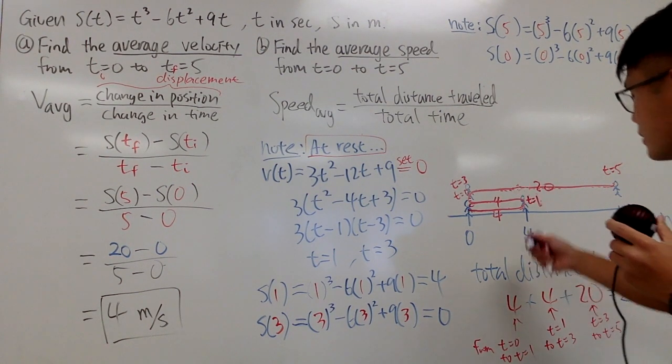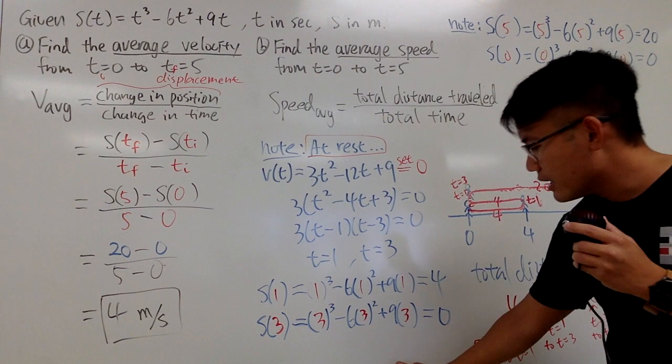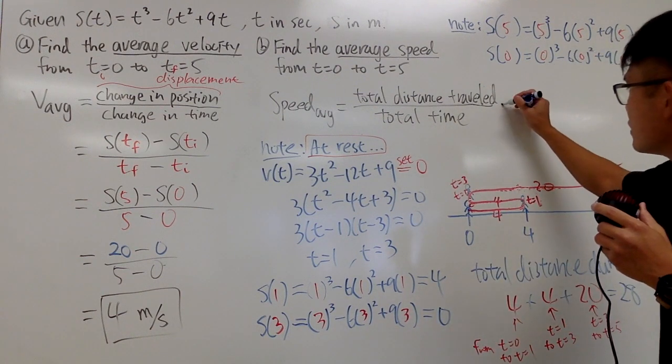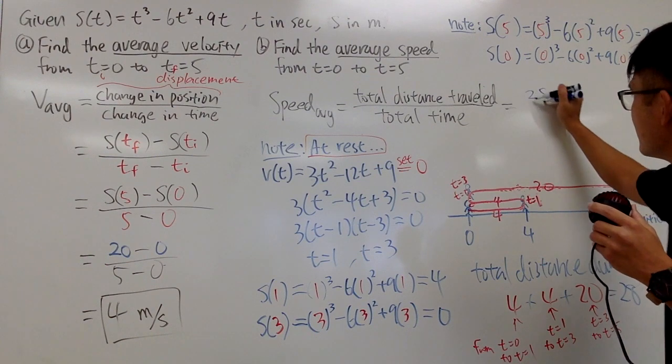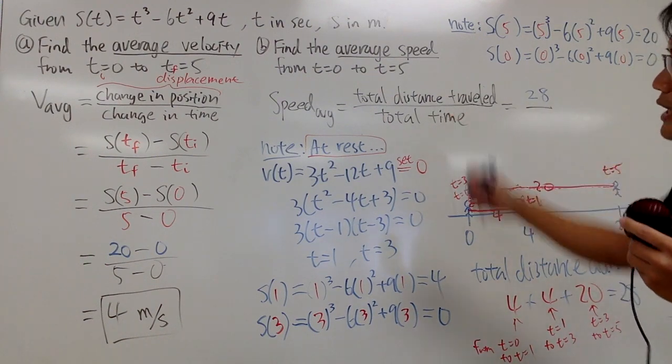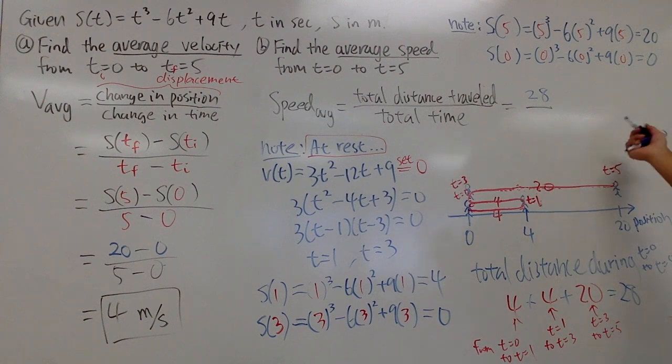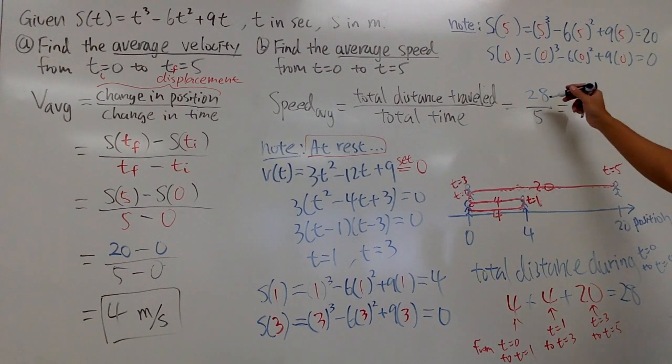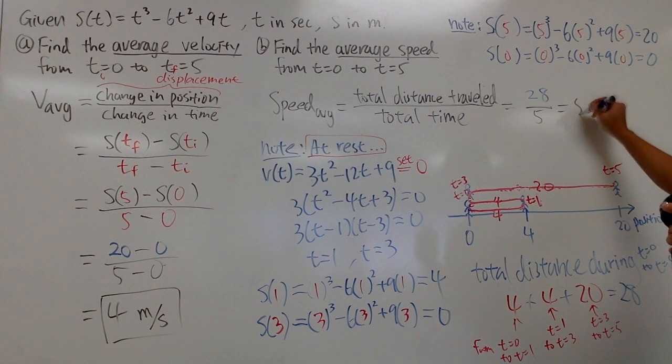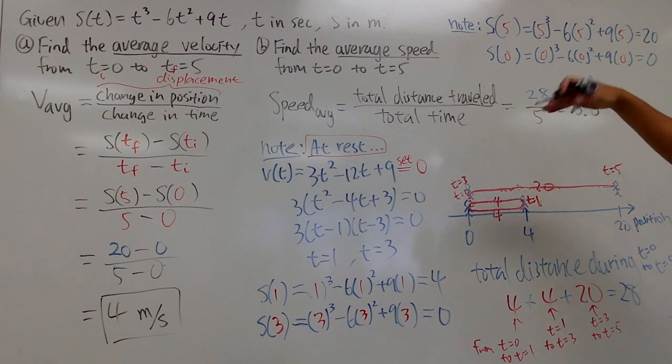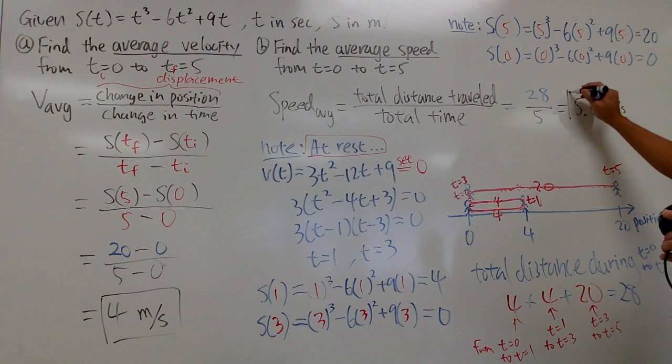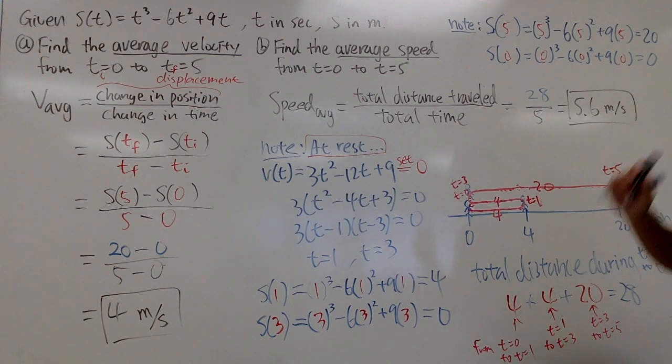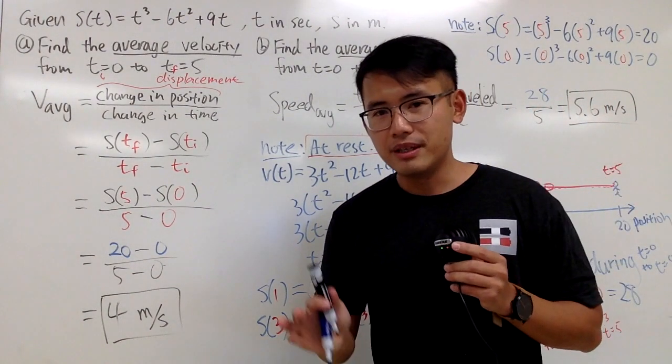With this picture, we see that the total distance traveled is nothing but just the answer we got, which is 28. Then divided by the total time that we are talking about during this time interval, which is just 5 minus 0, which is 5. Divide, do whichever way that you like, you get 5.6. This is also a speed, so we should give the unit, namely meters per second. This is how we do average speed at the moment.